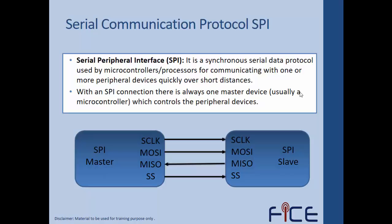SPI uses four lines. One is SCLK — the serial clock. Second is MOSI — Master Out Slave In. Third is MISO — Master In Slave Out. Fourth is SS — Slave Select. So MOSI carries data from master to slave, MISO carries data from slave to master, and SS is used to select a specific slave device.